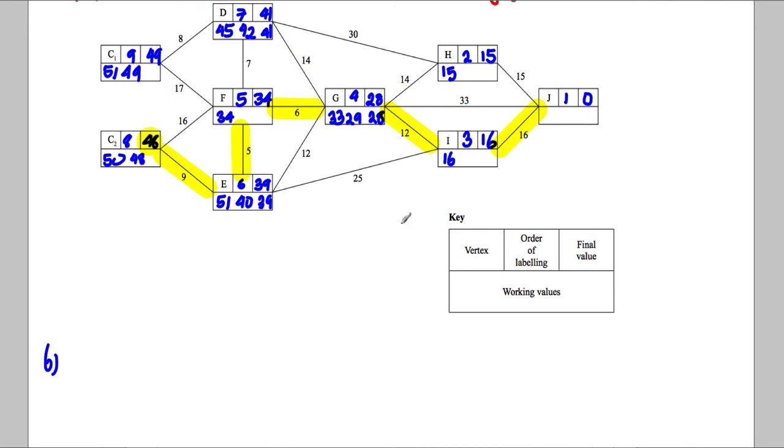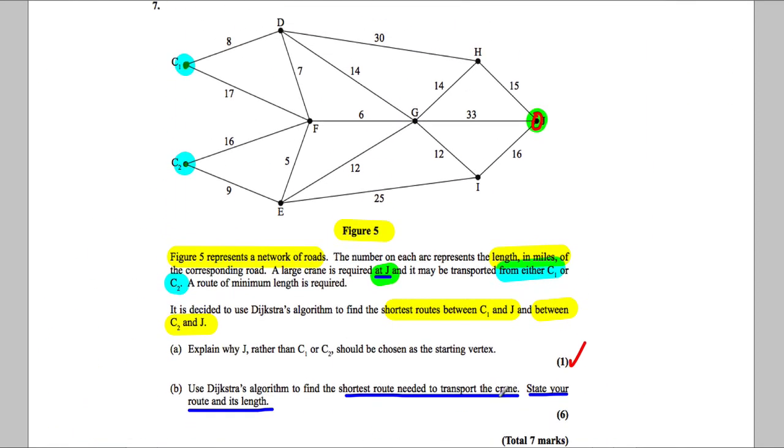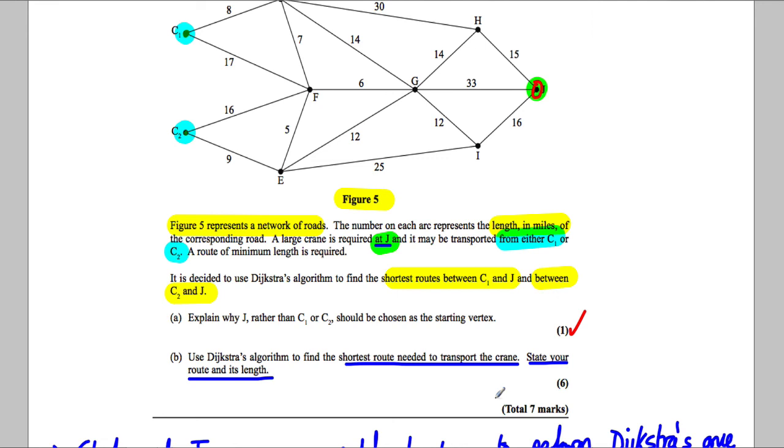Be very careful here to state the route the right way. We are not going from J to C2, we're going from C2 to J. It's just we did it this way because part a said we don't have to do it twice. So the route is C2 to E to F to G to I to J, and the length is 48 miles. Be super careful there - that last bit is tricky and a lot of students lose marks there.